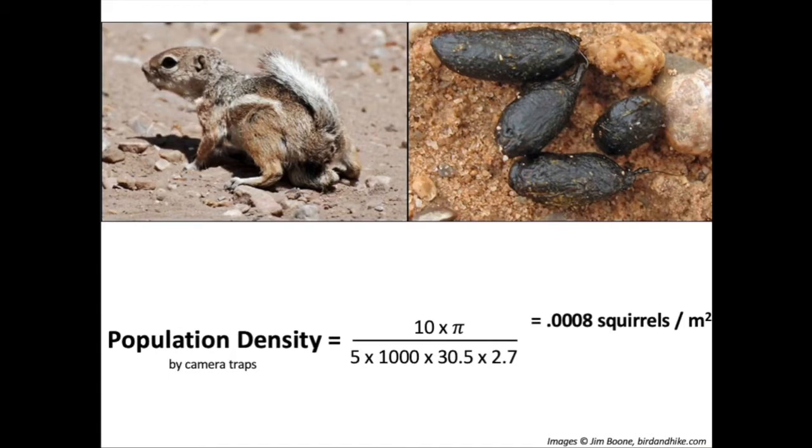Calculating population density by camera traps: I got 10 total images, had one camera trap out for five days, the animal moves about 1,000 meters per day, trigger distance is a maximum of 30.5 meters, and the camera angle is 2 plus 0.70 radians. This gives a population density estimate of 0.0008 squirrels per meter squared, or about 8 squirrels per hectare. The model assumes individuals are unique and use space randomly — but think about how camera trap placement might affect your image count. For example, placing a trap facing a burrow entrance could mean you're repeatedly photographing the same animal.